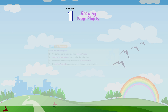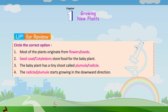Up for review. Circle the correct option. Most of the plants originate from seeds. The seed coat stores food for the baby plant — cotyledons store food for the baby plant. The baby plant has a tiny shoot called the plumule. The radicle starts growing in the downward direction.